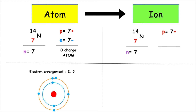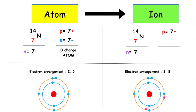Nitrogen is a non-metal. It has the electron arrangement 2-5. All elements want to achieve stability by having a full, stable outer electron shell. The nitrogen atom will gain three electrons to form a nitrogen ion. The number of protons inside the nucleus has remained the same, but this time we have 10 electrons. That means the charge on the nitrogen ion is 3-.